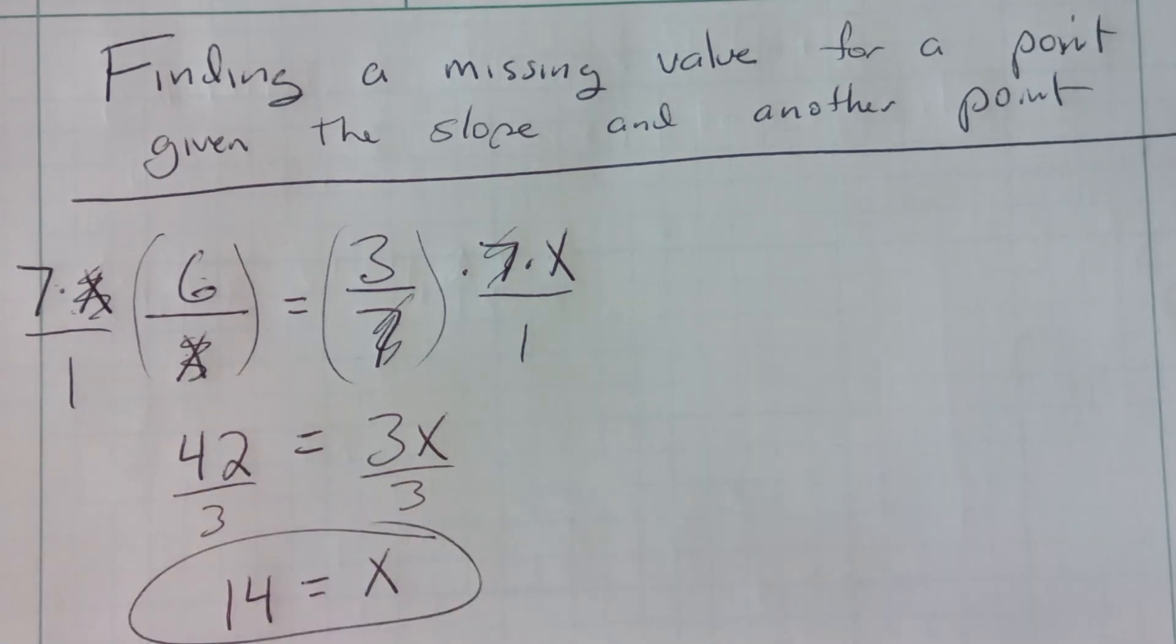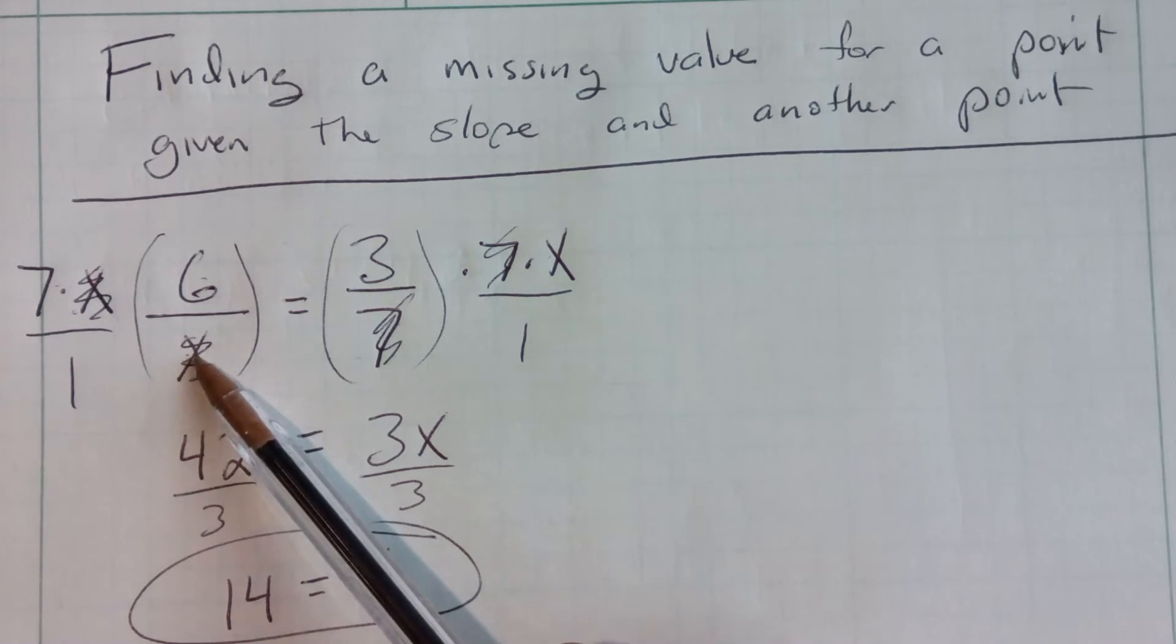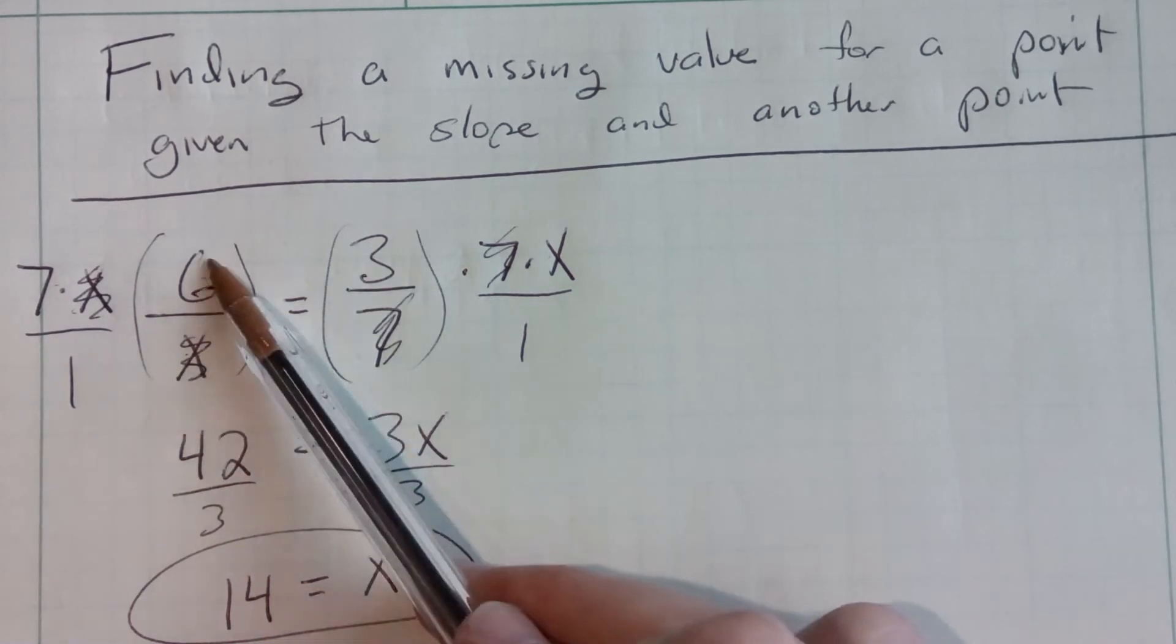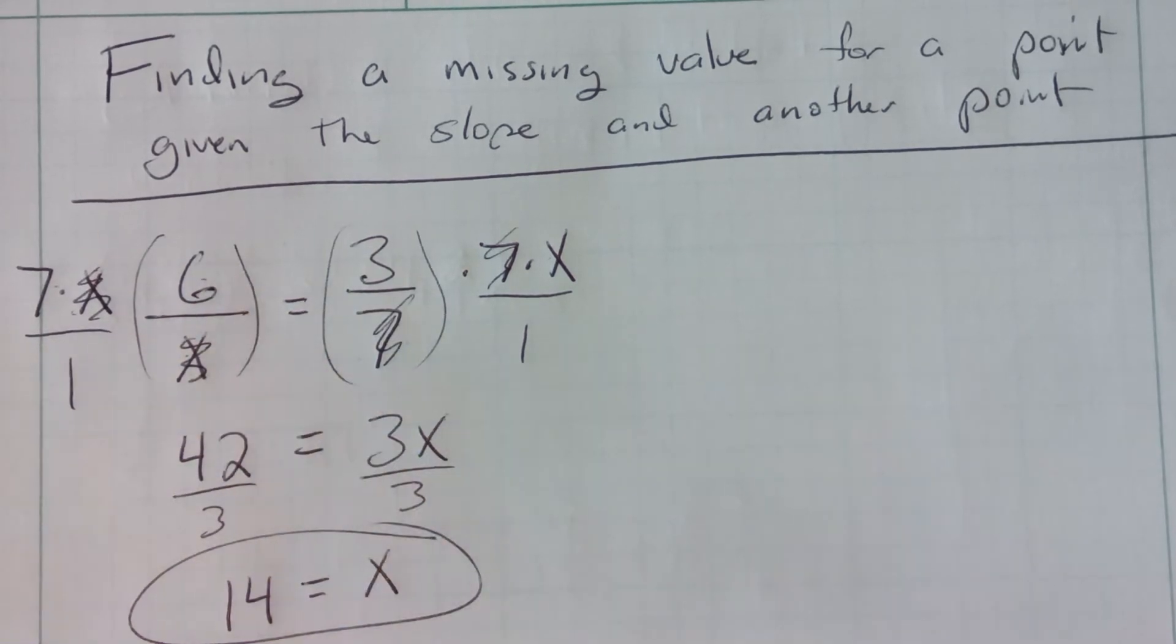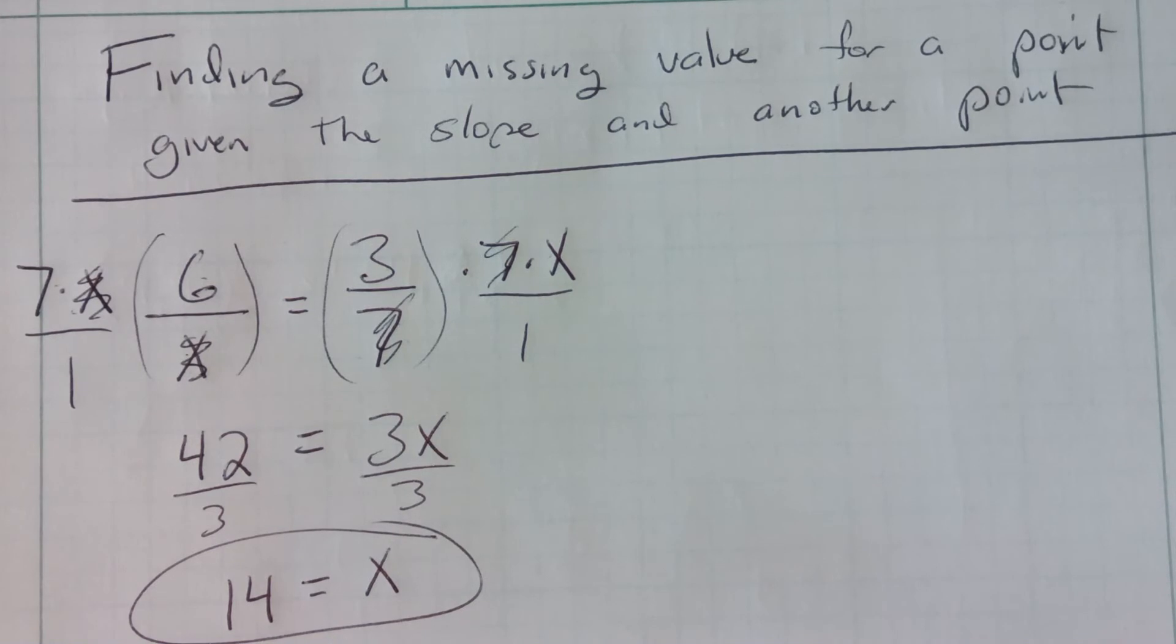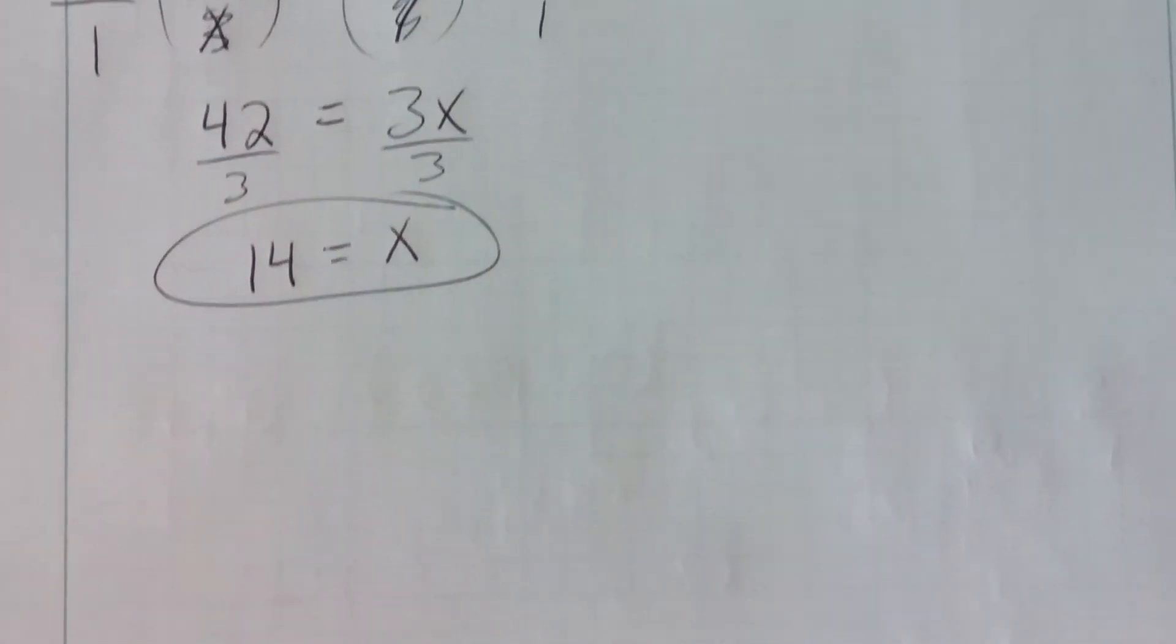Okay? It's called cross-multiplying. 3 times x is equal to 6 times 7. Now, don't confuse that with cross-simplifying when it comes to multiplying fractions together. But let's do an example of what I'm talking about in the homework today.